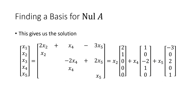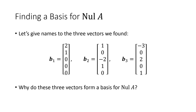We can split that solution into separate vectors, one for each free variable. We had three free variables — x2, x4, and x5 — so we get three vectors. Naming them b1, b2, and b3, I claim these three vectors form a basis for the null space of A. That means we need to prove they are linearly independent and that their span equals null(A).